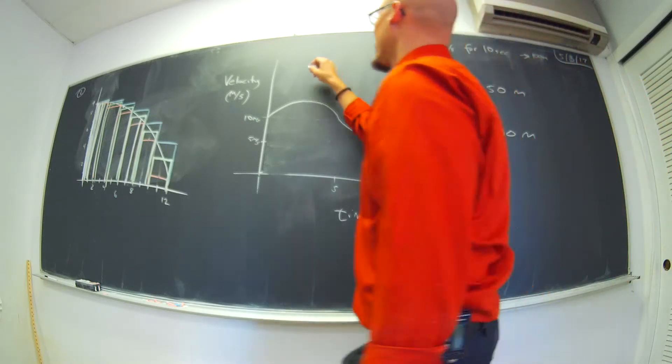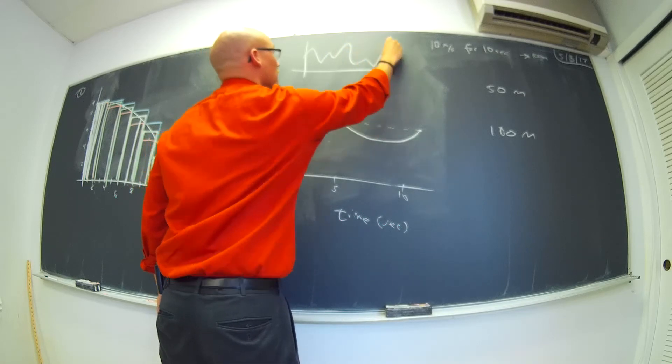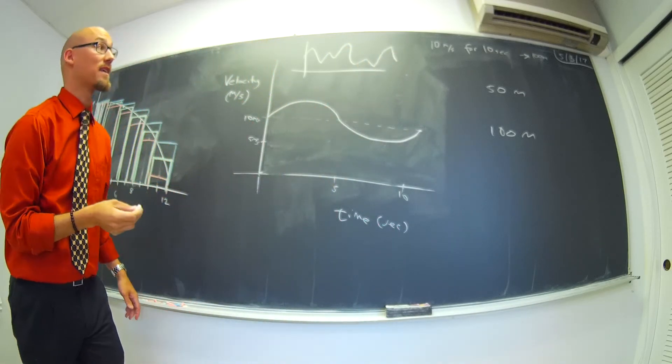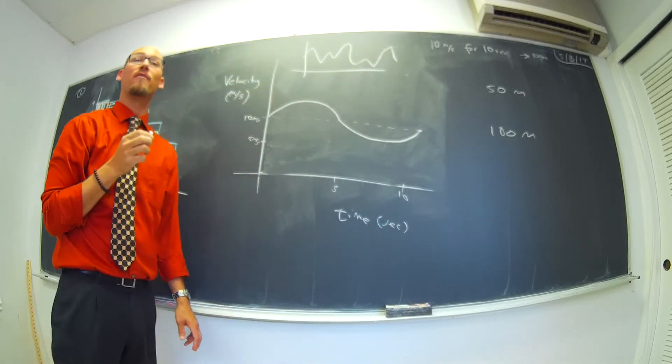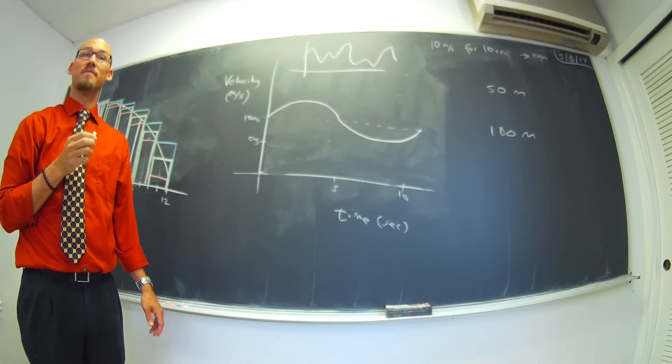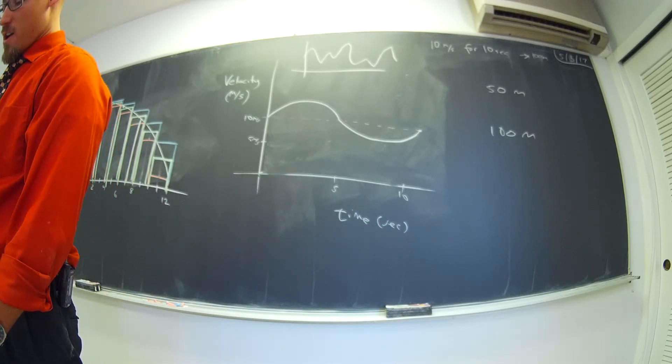But, you know, what if your velocity curve, you know, looked like this? Man. Or whatever. You could take the integral, you could find the area under this curve, and find exactly how far you traveled. Damn. It's pretty groovy, man. No way, dude. No way! No way!